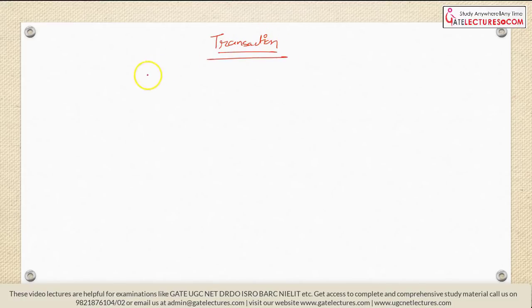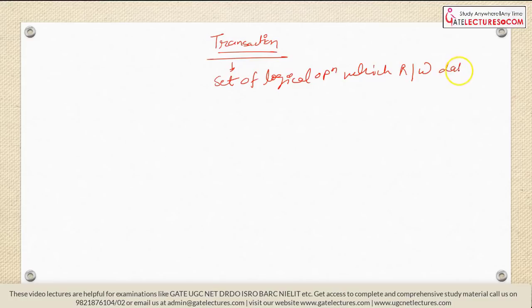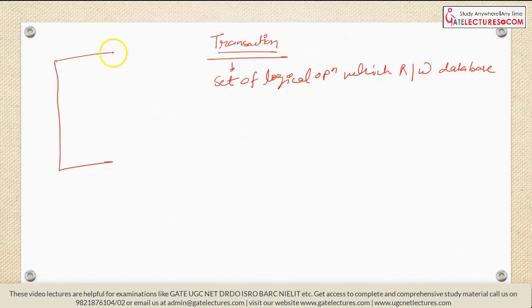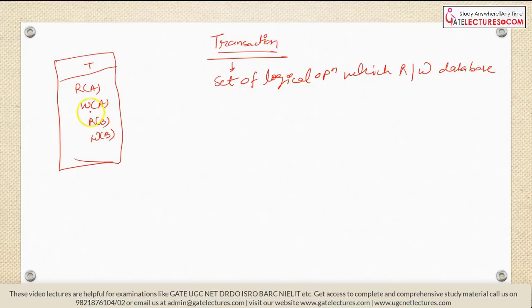What are transactions? What do you mean by transaction? Transactions are nothing but a set of logically related operations which read or write the database. When you execute these operations, they will do some modification on the database — they will read some data item or write some data item. The form of a transaction T will include read and write operations, and after performing all the operations it will say commit. Commit means it has executed all the operations successfully, and you can reflect those modifications in the database — there is no rollback.